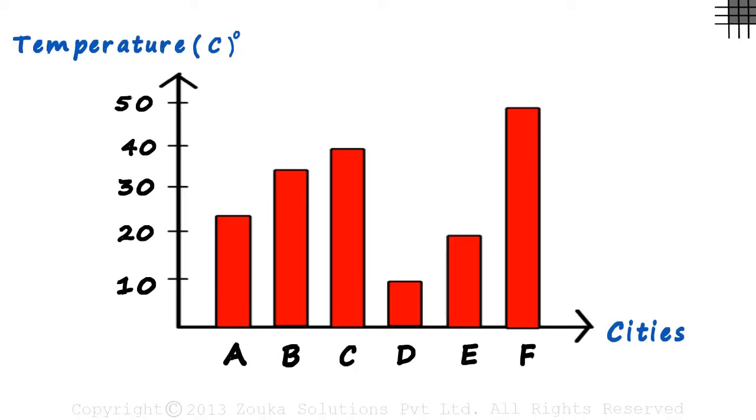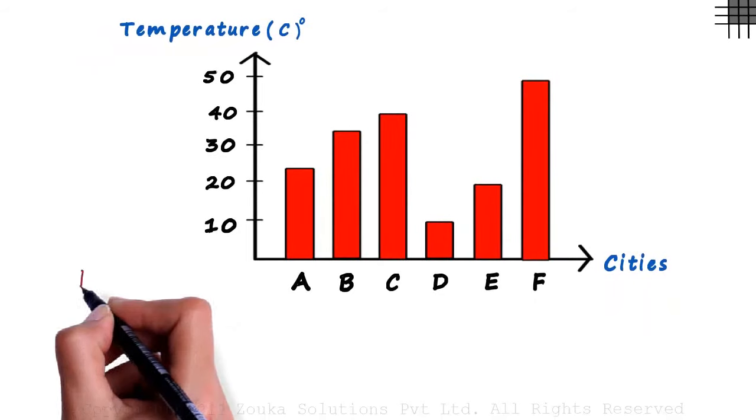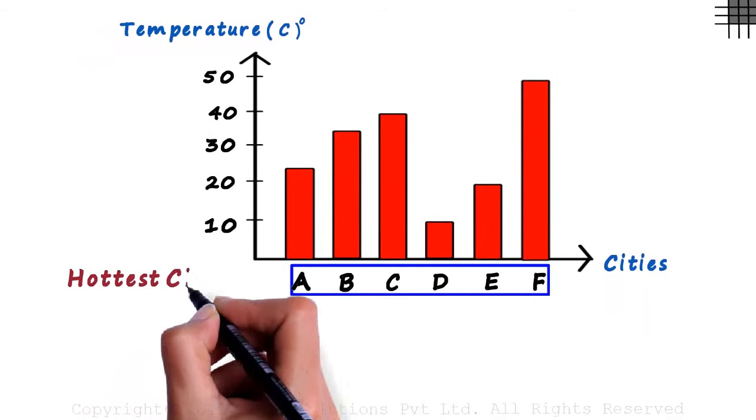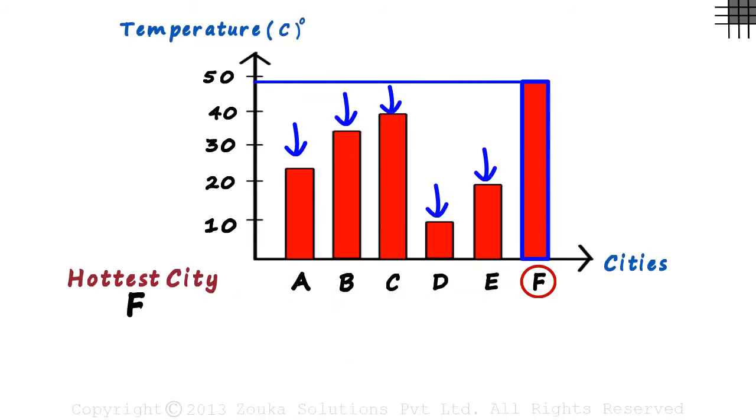Now just by looking at this graph, let's try to answer a few questions. Here's the first one: Which is the hottest city among these six cities? Well, it's obvious. It's city F as its average temperature is highest among peers.